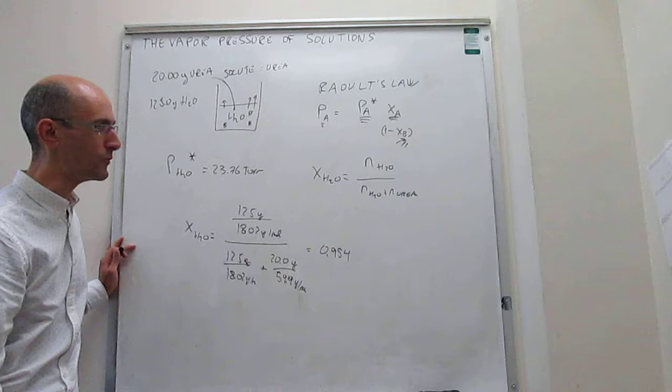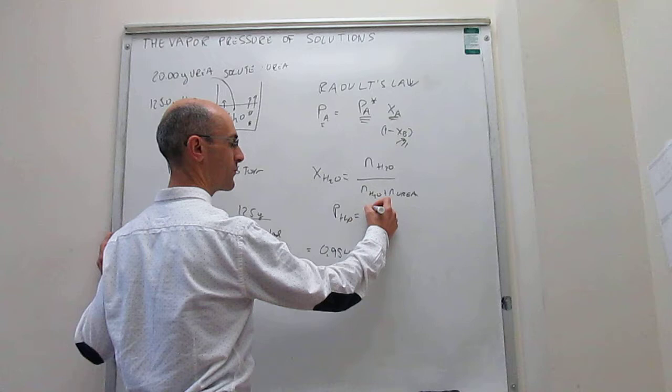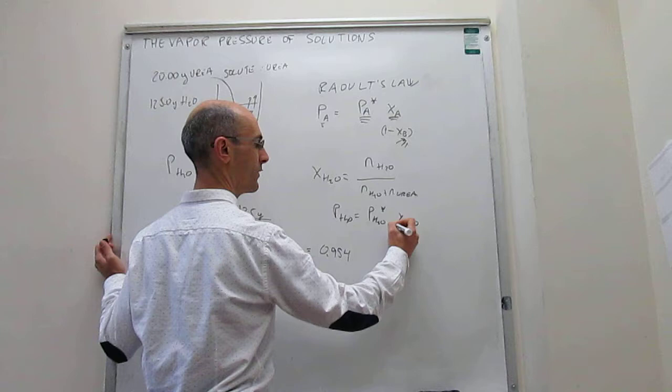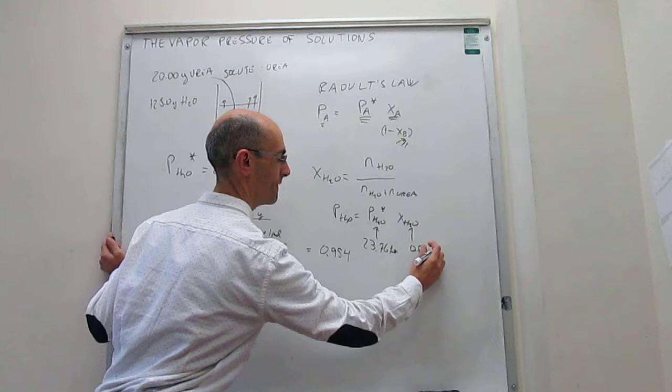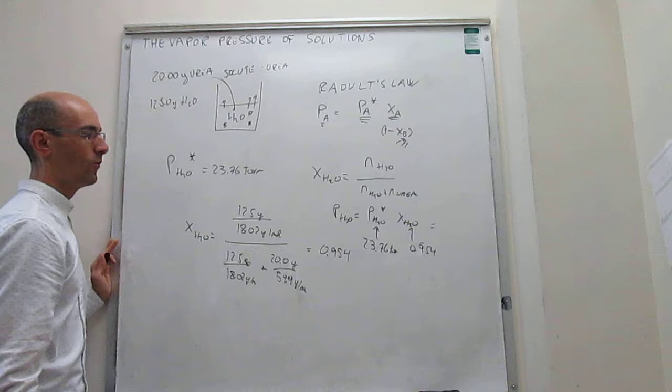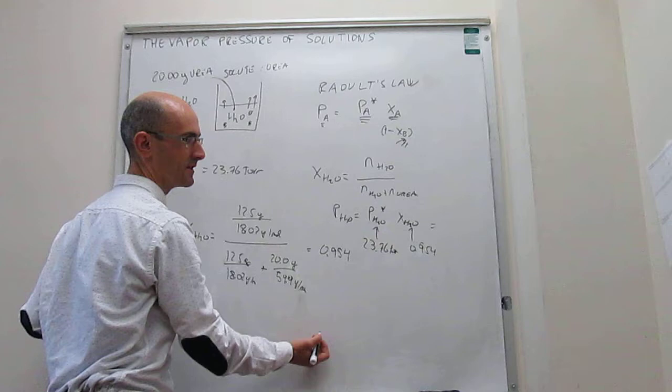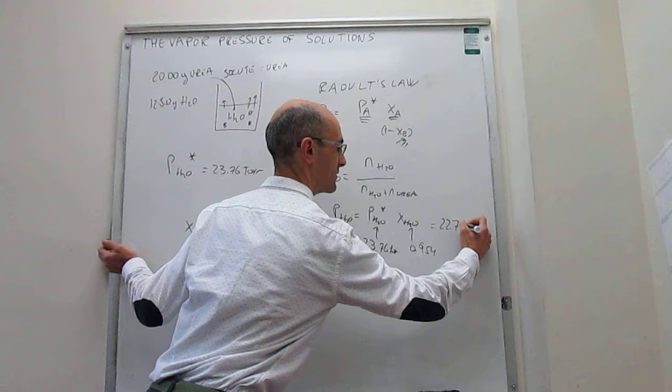So the vapor pressure of water in that mixture is going to be equal to the vapor pressure of water when pure times the mole fraction of water. And then we have all the data. This is 23.76 Torr, and then this is 0.954, which means that your final vapor pressure of the liquid is going to be about 95% of the vapor pressure when pure, which turns out to be about 22.7 Torr.